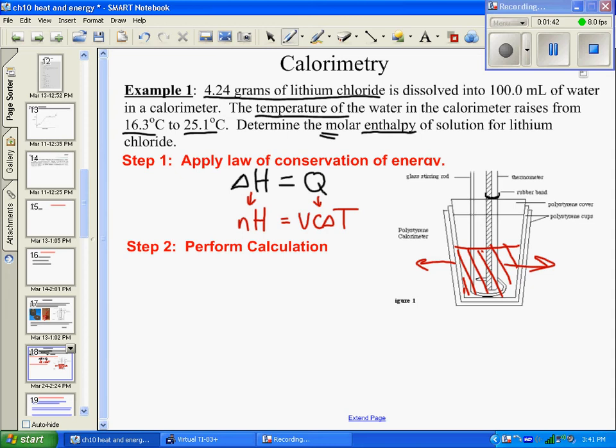Let's write down the data we have. 4.24 grams of lithium chloride, that's the mass. For water, we have a volume of 100 mL, which is 0.1 liters.